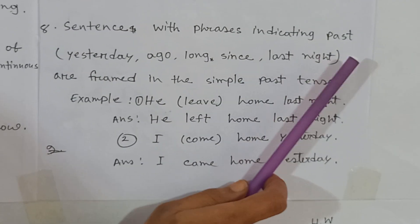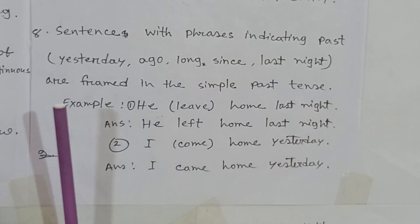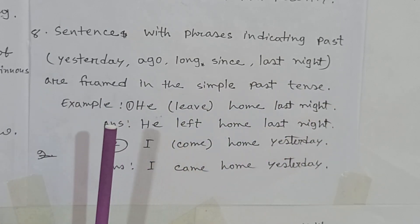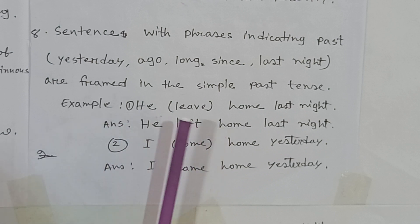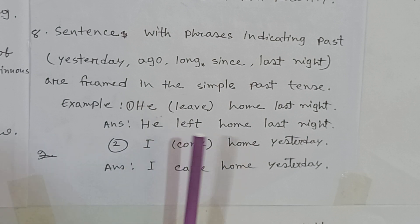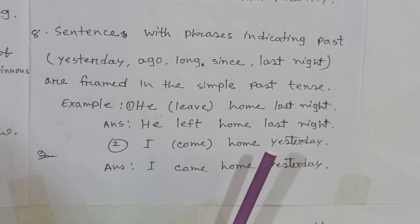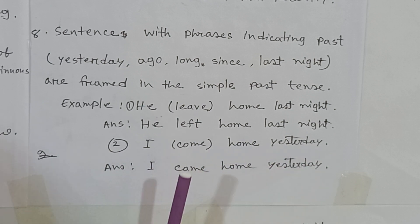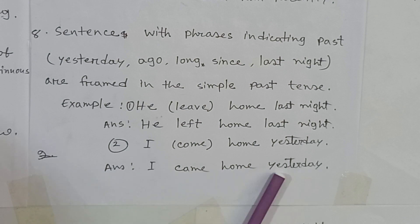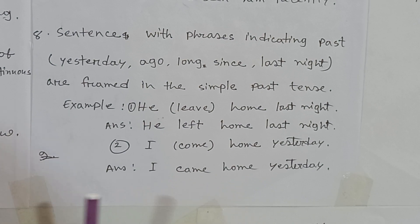Rule number eight: sentences with phrases indicating past — yesterday, ago, long since, last night — are framed in the simple past tense. For example, 'He (leave) home last night' — you write 'He left home last night.' Another example: 'I (come) home yesterday' — you write 'I came home yesterday.'